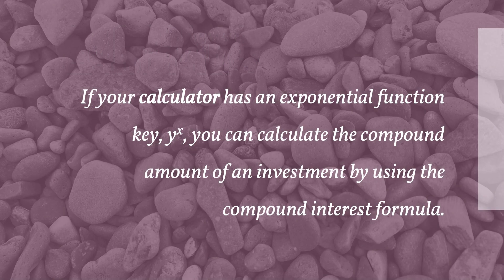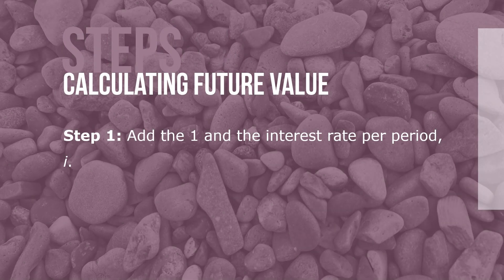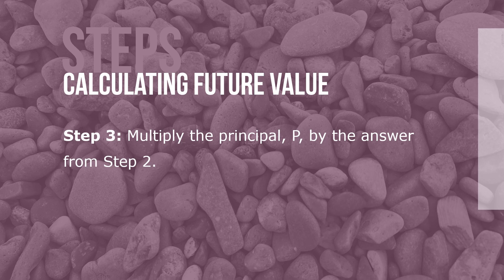If your calculator has an exponential function key Y^x, you can calculate the compound amount using the compound interest formula: A = P × (1 + i)^n, where A is the compound amount, P is principal, i is the interest rate per period, and n is the total number of compounding periods. Step 1: Add 1 and the interest rate per period. Step 2: Raise that sum to the nth power using the Y^x key. Step 3: Multiply the principal P by the answer from step 2.